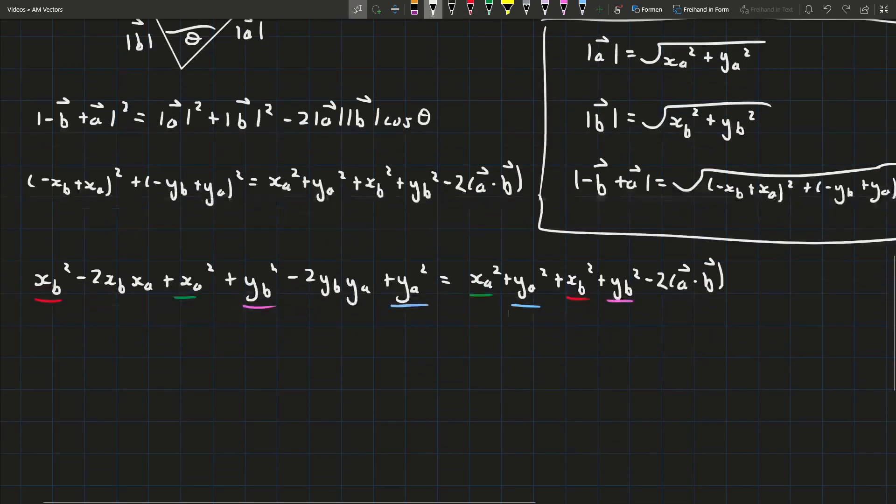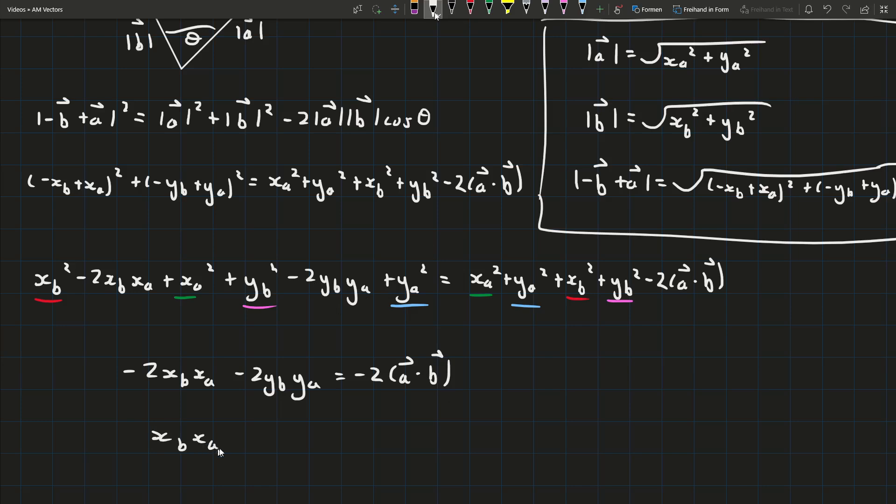They all cancel out and all we're left with is minus 2xb·xa minus 2yb·ya equals minus 2 times the dot product of vector a and vector b. Dividing across by minus 2 tells us that xb·xa plus yb·ya is the exact same as the dot product between a and b.